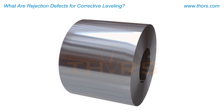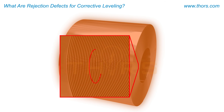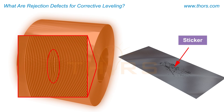Heat treating, or heat treatment, refers to the controlled heating and cooling of metals to improve the mechanical properties and microstructure of the metal. Annealing stickers are marks left on the material due to improper annealing, which is a common heat treatment practice.